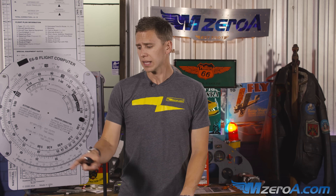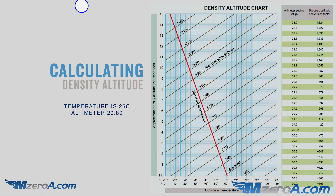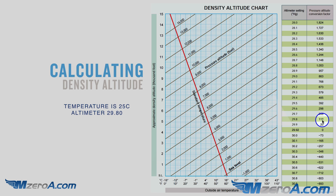Now I'm going to show you three ways to calculate density altitude. The first is how you probably did it on your knowledge test. This chart is straight from the private pilot knowledge test supplement. Let's say they give you a temperature of 25 degrees Celsius and an altimeter setting of 2980. First, as with any performance chart, we need to know our pressure altitude. We take our altimeter setting of 2980, find it on the chart, and we get 112 feet as our pressure altitude.